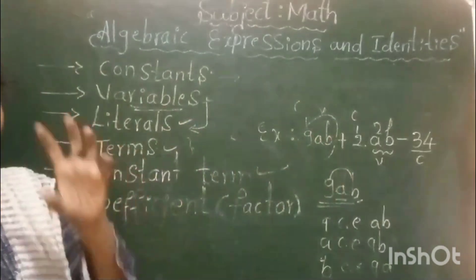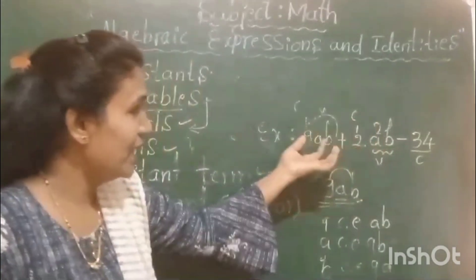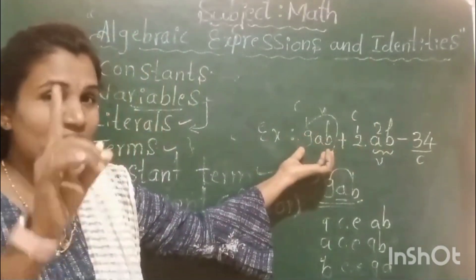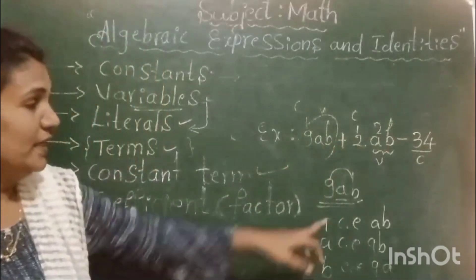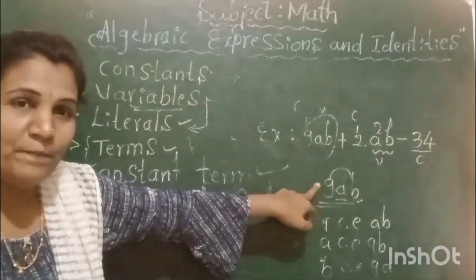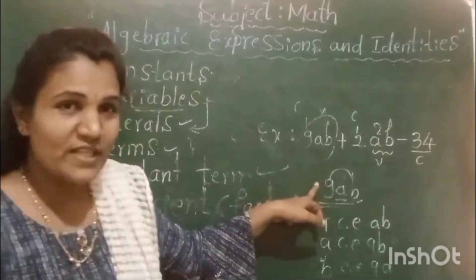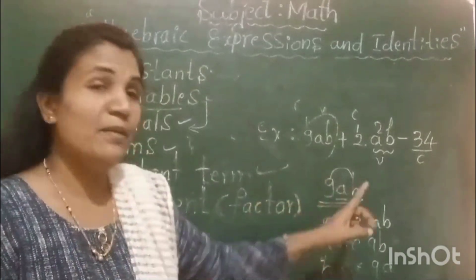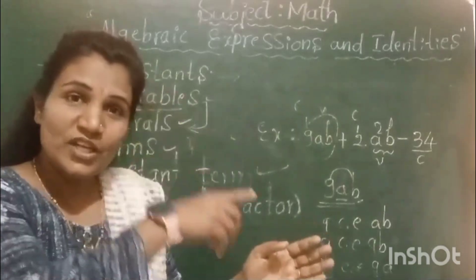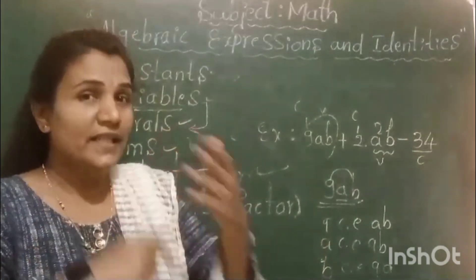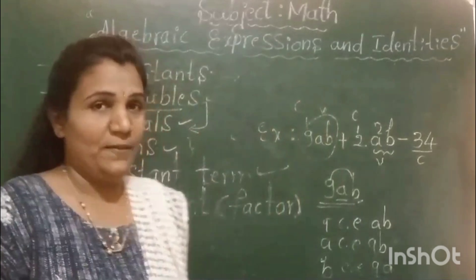Taking this one term 9ab: 9ab is also a term of this whole algebraic expression, and it is also an algebraic expression in itself — specifically a monomial. In the next class I am going to tell you about the types of algebraic expressions.